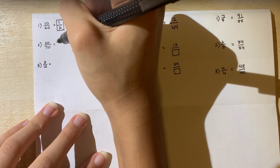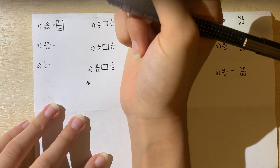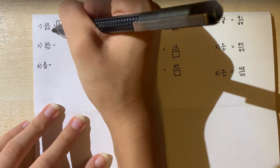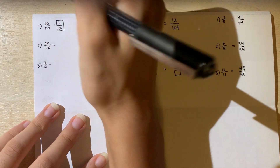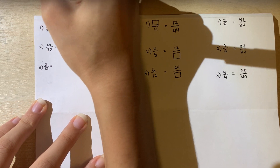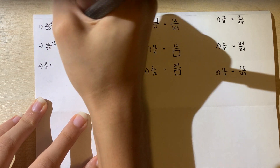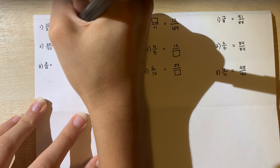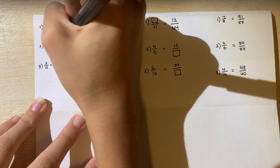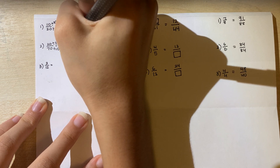The second question asks for the simplified form of 20 over 70. The greatest common factor for 20 and 70 — just like the first question — is 10, so you divide both by 10. 20 divided by 10 is 2, and 70 divided by 10 is 7. So the final answer is 2 over 7.